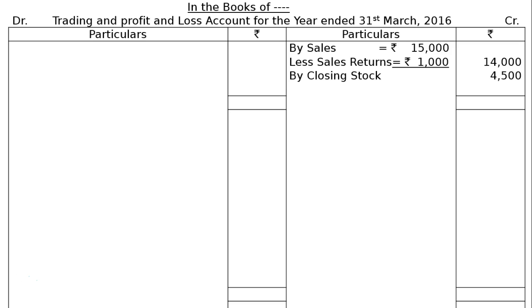There is one more major item: Loss by Fire. A fire occurred on 25th March 2016 in the godown, and stock worth Rs. 1,000 was destroyed. It was fully insured and the insurance company admitted the claim in full. So, By Loss by Fire: Rs. 1,000. This has four treatments: shown on the Trading Account credit side, in the Profit and Loss Account debit side, as income due from the insurance company on the P&L credit side, and as a current asset (amount receivable from insurance company) in the Balance Sheet.